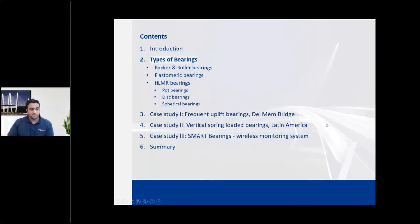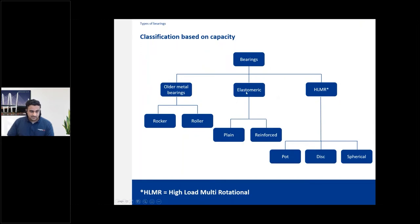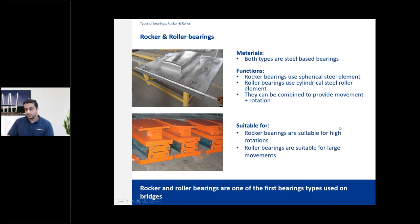Moving on to types of bearings. On the left are older metal bearings like rocker and roller. Then you have elastomeric bearings, which are rubber-based and can be plain pads or reinforced with steel shims. On the right are HLMR bearings — high load multi-rotational bearings. When you have higher loads and rotation demands, you use pot, disc, or spherical bearings. We'll look into each one in detail.